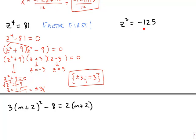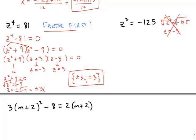For z³ = −125, some students ask: can't we just take a cube root of both sides? If we did that, cube root and cube cancel, giving z = −5. But we're supposed to get three solutions — so we'd be missing two. That's why you don't want to do that. You want to factor as much as possible first to ensure you get all the solutions.